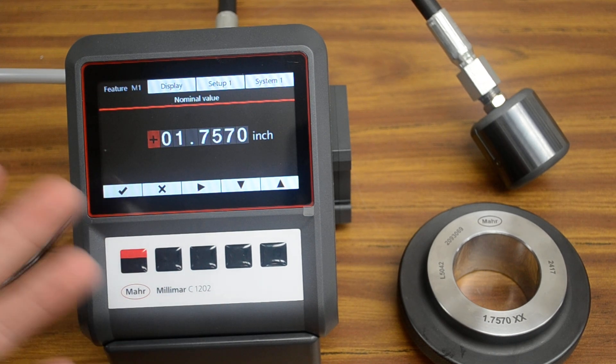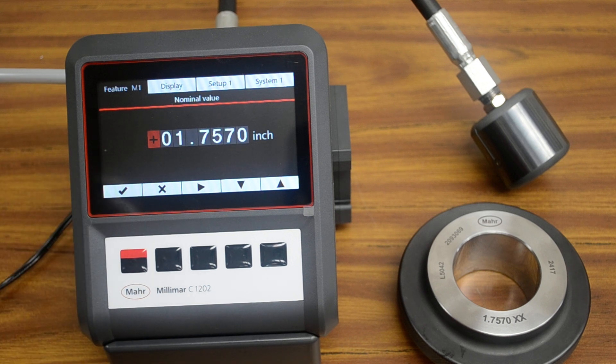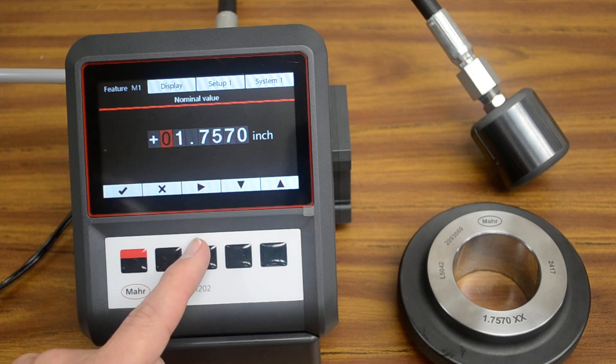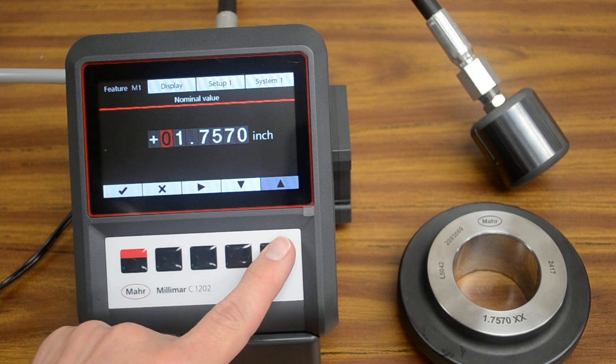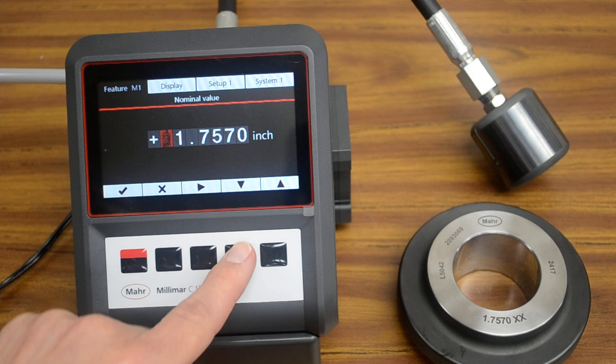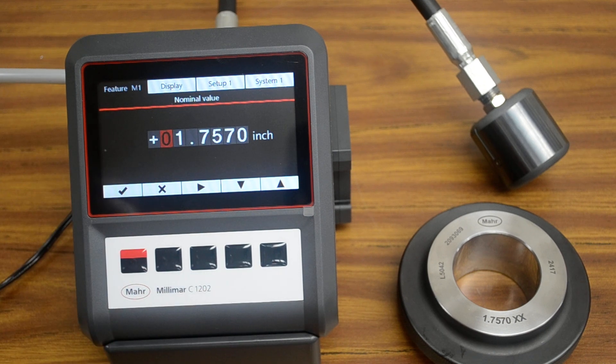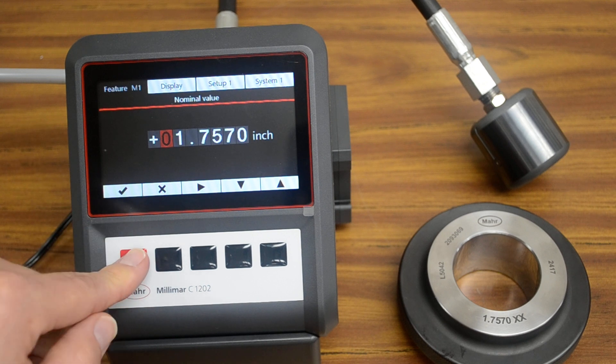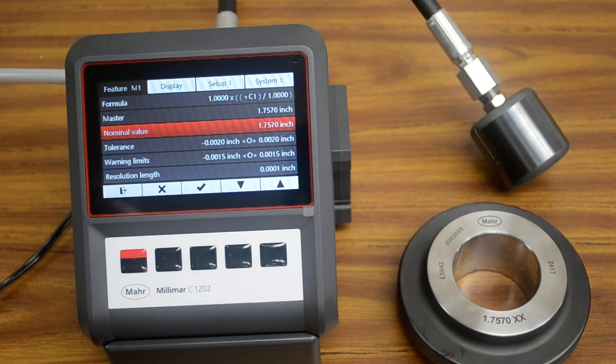The nominal value is going to be a positive value, so we're going to leave that as a plus. Then you can use the right arrow to move between the digits, and the up-down arrow to change the digits. I already have it set up for 1-inch 757, which is the nominal value I'm looking for. So I can just press the soft key under the check mark to enter that value.